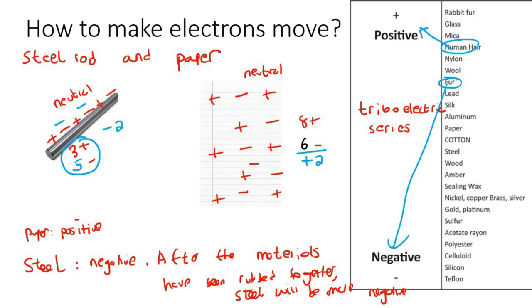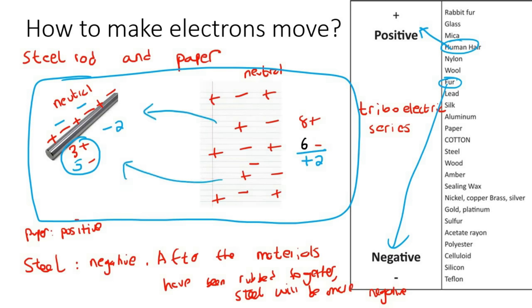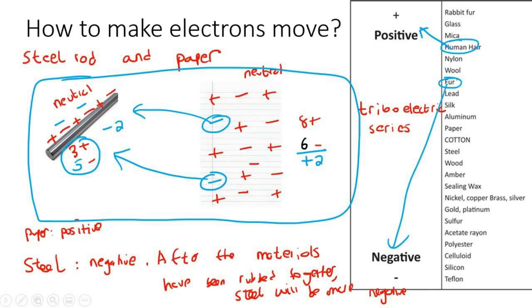Another thing I want to mention: if you put a big box around these two objects, there were no electrons added or taken away from the whole system. All that happened was the electrons just moved over. We didn't add any electrons from outside, we simply moved them from the paper to the rod.